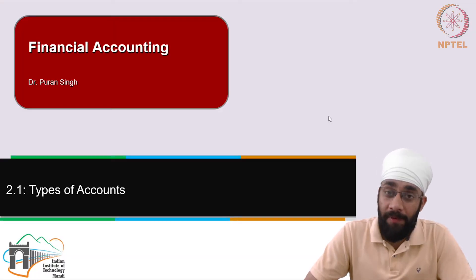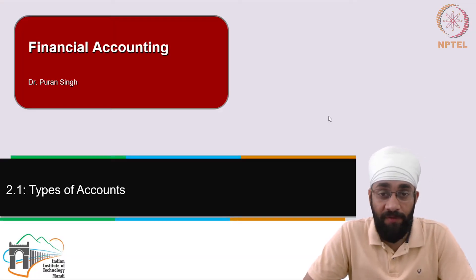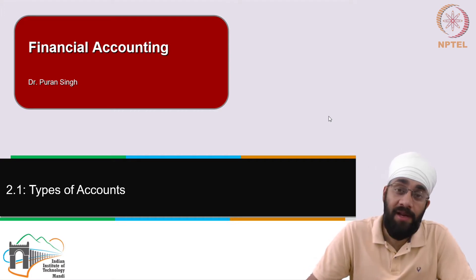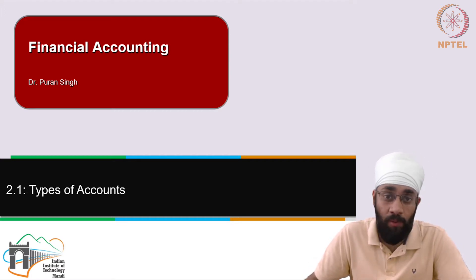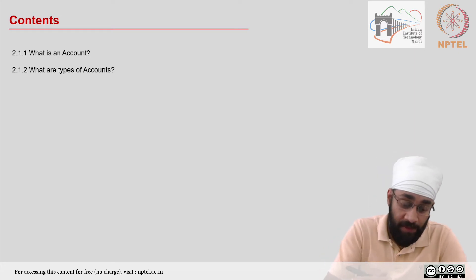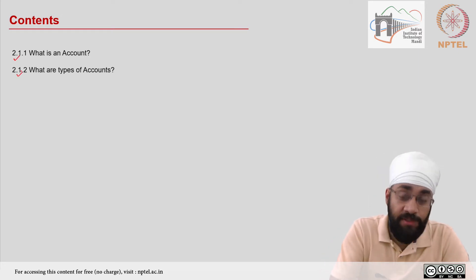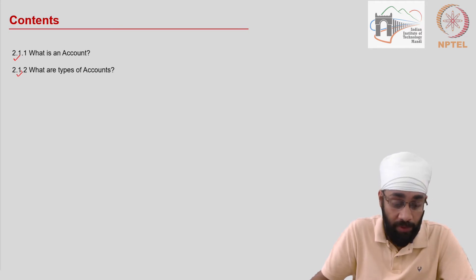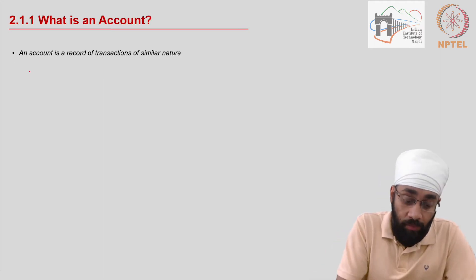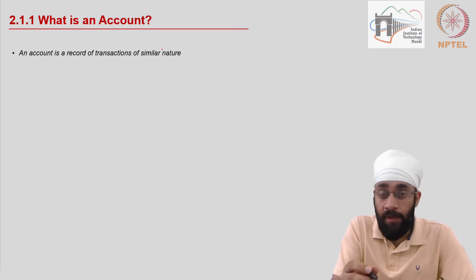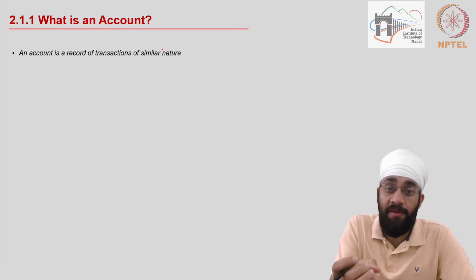The first item in the building blocks of the double entry system is 'account.' Let us understand what is an account and what are the types of accounts — these are the topics of discussion for this video. An account is a record of transactions of similar nature.